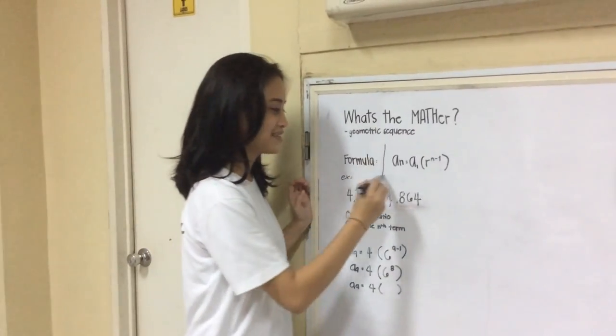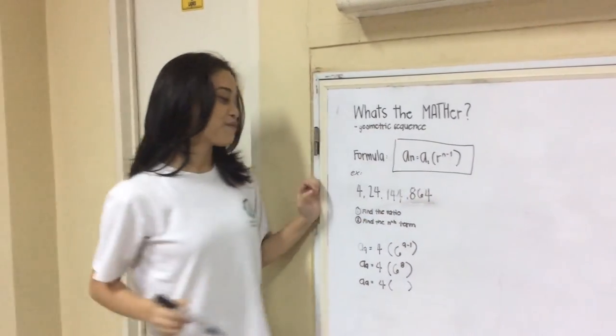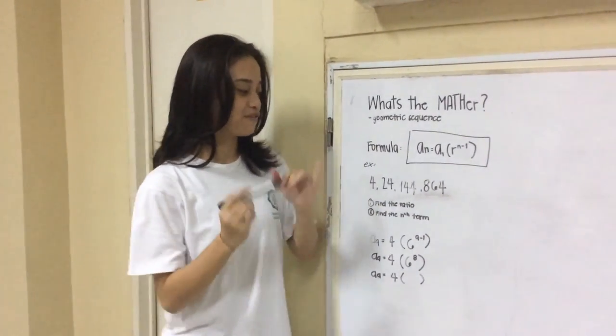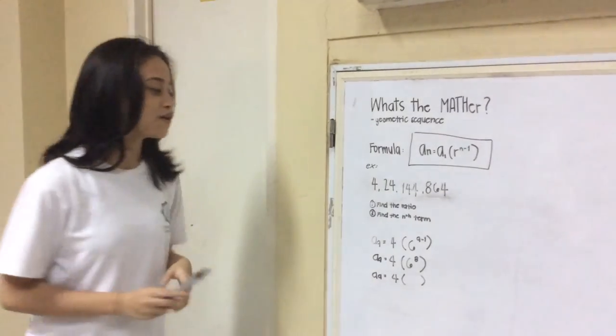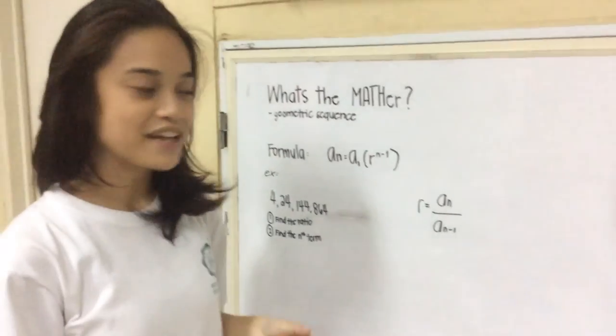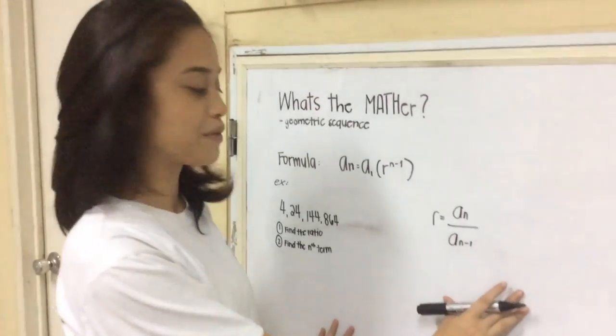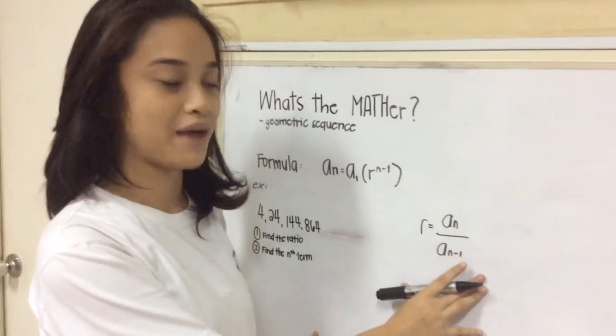Now we know the formula! We have given you an example: 24, 144, 864. So, first we have to find the ratio. To find the ratio, we are going to use this formula, a_n over a_n minus 1.